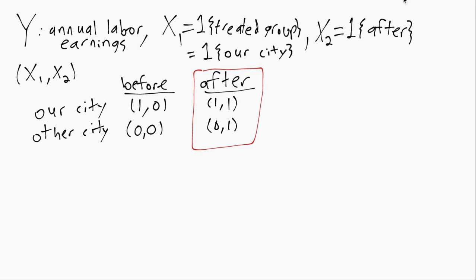So that would be bad because we would be sort of lumping all these other differences that affect earnings, lumping those together with the treatment or the policy we're actually interested in.